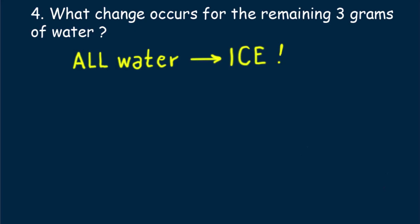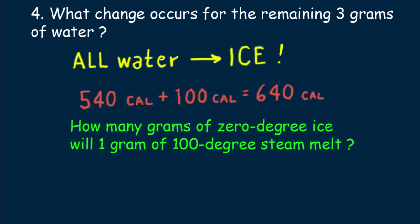I want to leave you with a question. First, we know that 1 gram of 100 degrees steam releases 540 calories of heat when it condenses to 100 degrees Celsius water, and 100 additional calories for the water to cool to 0 degrees Celsius. That's a total of 640 calories from steam to ice water. So here's my question. How many grams of 0 degree ice will 1 gram of 100 degrees steam melt?